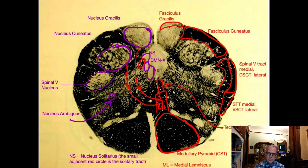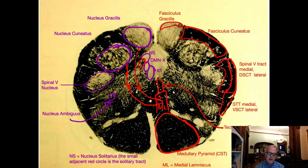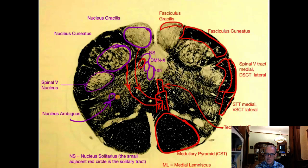This picture shows the sensory decussation — the internal arcuate fibers from nucleus gracilis and cuneatus crossing over to the opposite medial lemniscus. We have the hypoglossal nerve, dorsal motor nucleus of the vagus, and the nucleus solitarius and tract. The nucleus ambiguus — no typo, spelled A-M-B-I-G-U-U-S — is in the lateral medulla. I wouldn't ask you to identify it precisely because its location is ambiguous, but you need to know it's in the lateral medulla and is part of lateral medullary syndrome.